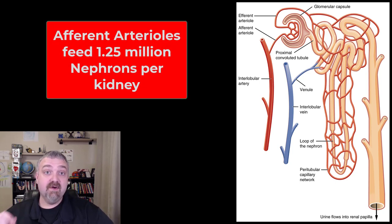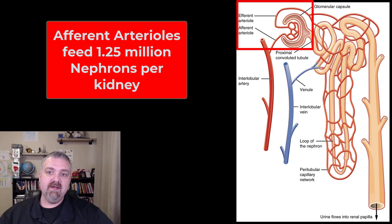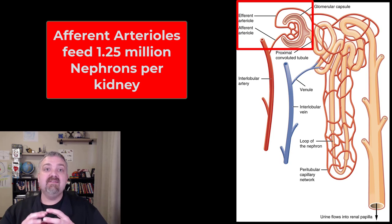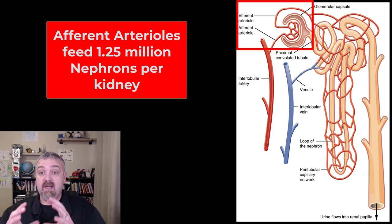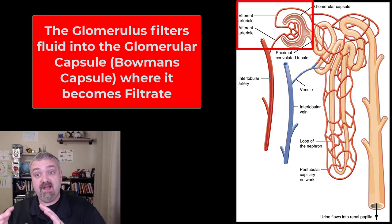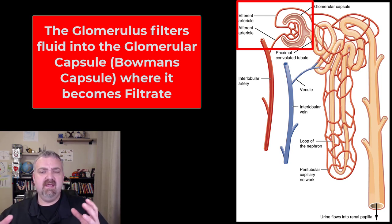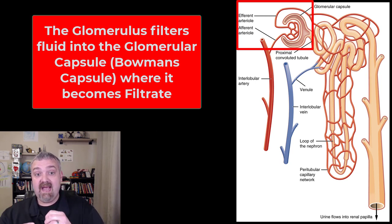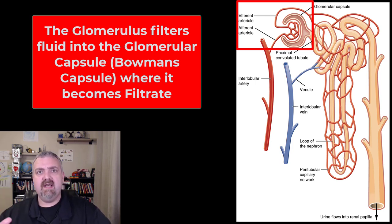The nephrons are considered the functional units of your kidney. Each kidney should have about 1.25 million of them. The action starts in the upper left-hand corner with the afferent arterioles, which are going to feed these knots of high-pressure capillaries called the glomerulus, which squeeze a lot of fluid out. This fluid being filtered out is captured by the glomerular capsule or Bowman's capsule. When you put them together — the knot of capillaries, the glomerulus, and the glomerular capsule — that's called the renal corpuscle. The fluid not lost there will leave through the efferent arterioles.